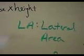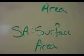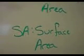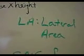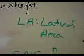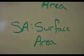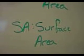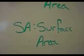LA stands for lateral area. SA stands for surface area. Lateral area is when we're trying to, say, paint the walls of a room. Surface area is when we're covering all of the surfaces, kind of like wrapping a present.